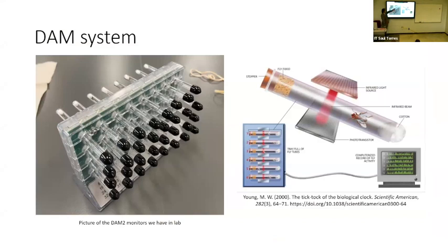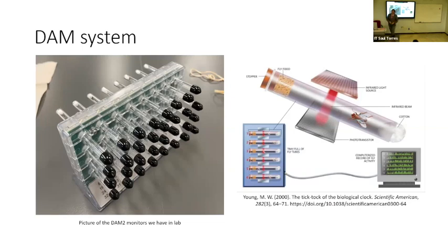The DAM system is composed of at least 10 monitors. Each monitor holds 32 tubes, and each tube holds a single fly with food and cotton to allow a little bit of air circulation. It's held in a monitor in an incubator set to a 12-hour day-night cycle for at least three days. The red line you see here is an IR light — every time the fly crosses this light, it's counted in the system as a tick. That data is saved into a computer running Windows XP.